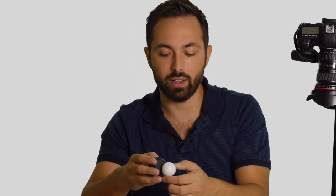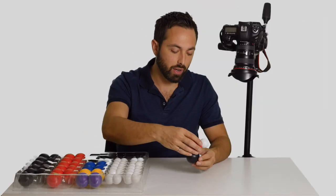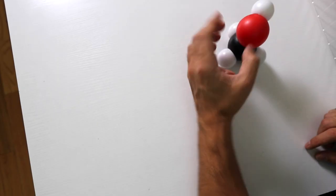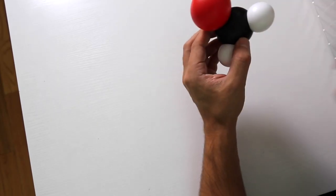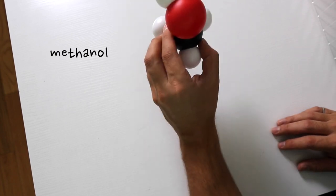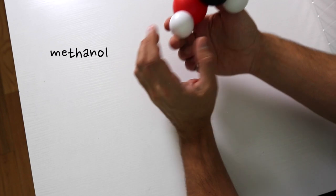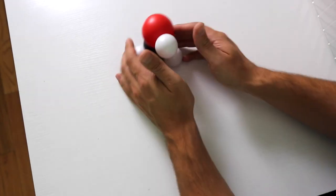So the simplest alcohol we can make has a single carbon, has some hydrogens bonded to that carbon and the OH group. And this, because it's got a single carbon, will be called methanol. Meth for the single carbon and then anol for the alcohol group here, the OH group.